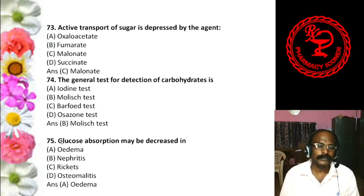Question 37: Sucrose consists of — Glucose+glucose, Glucose+fructose, Glucose+galactose, or Glucose+mannose. The answer is glucose and fructose. The three main disaccharides to remember: Sucrose = glucose + fructose; Maltose = glucose + glucose; Lactose = glucose + galactose. Questions are frequently coming from these three disaccharides.